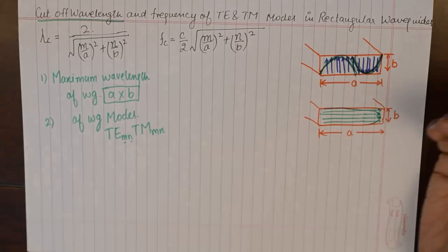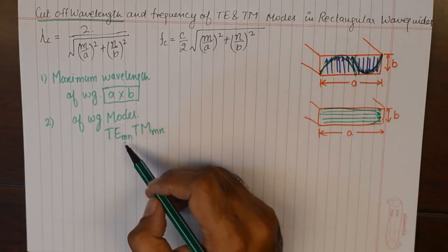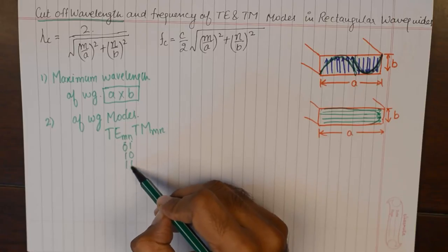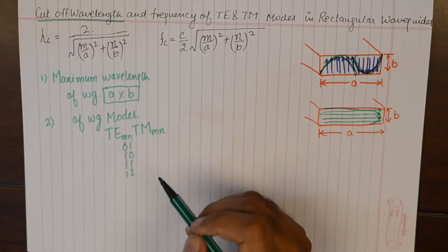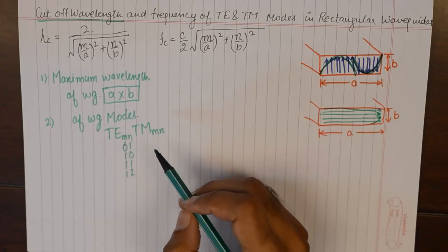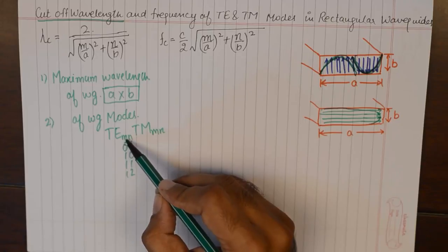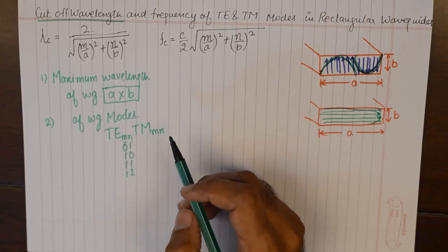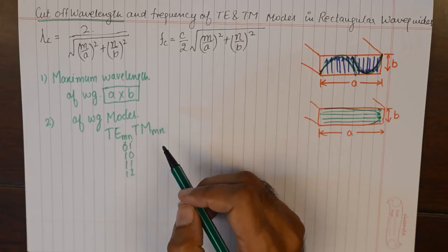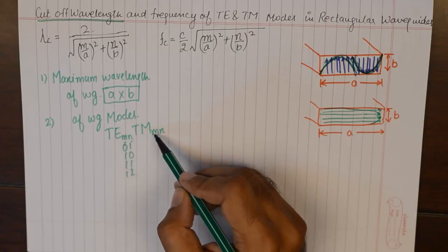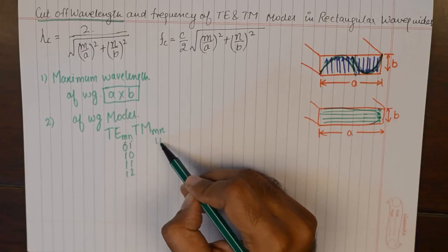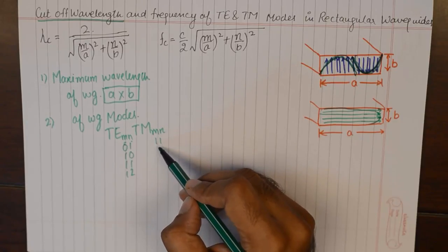M and N can take values such as 0,1 — 1,0 — 1,1 — 1,2 and so on, up to any number. One of them is permitted to be zero in the case of TE as discussed in the previous tutorial. The possible modes for TM start from 1,1 because neither M nor N can be zero.